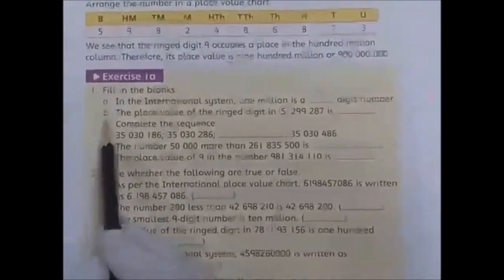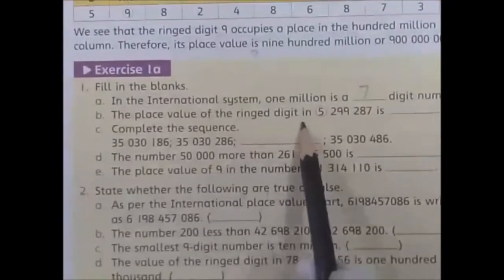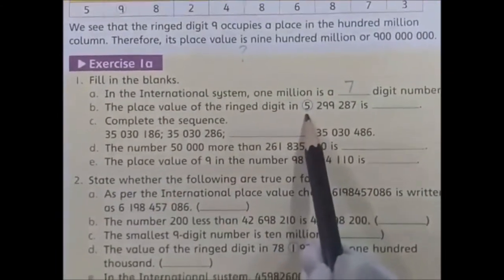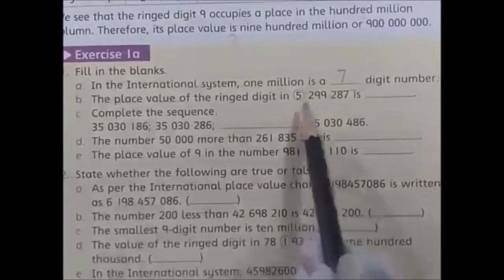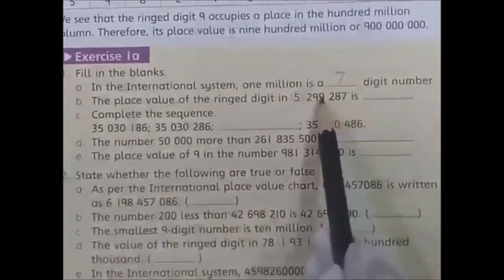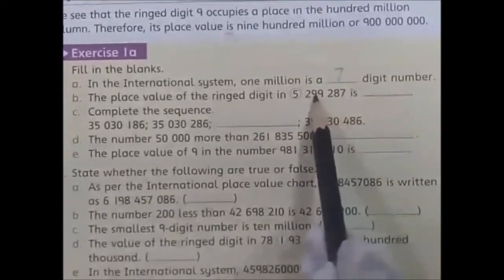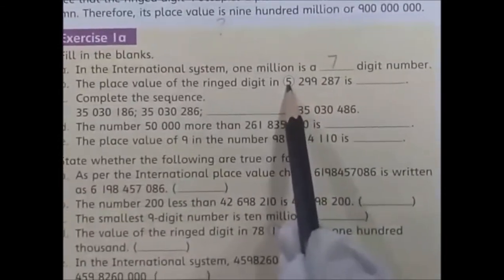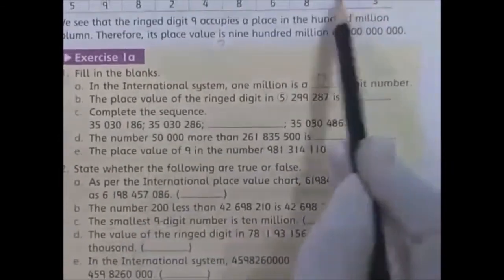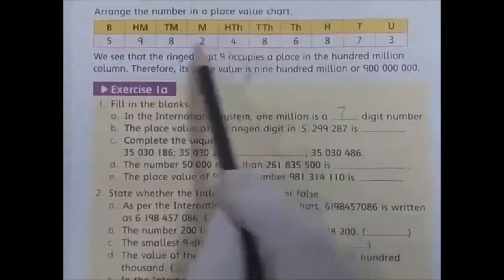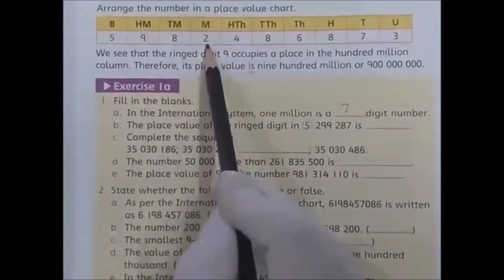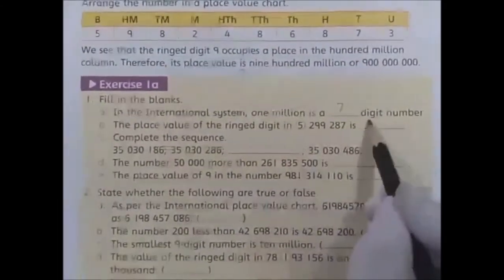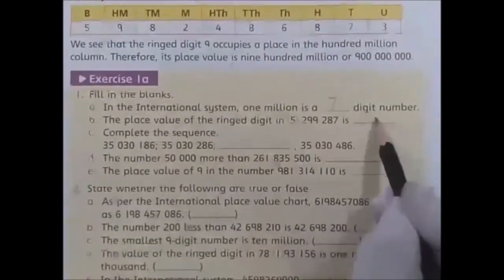Part B: the place value of the ring digit — the ring digit is five. How many digits are there? One, two, three, four, five, six, seven. The seventh place is million. So it is five million.